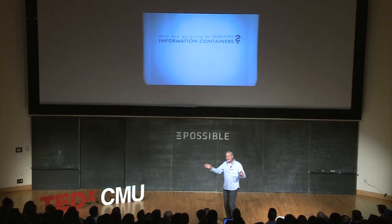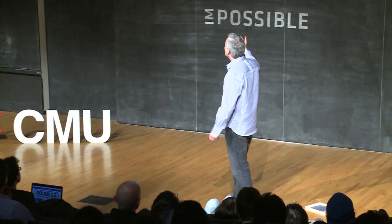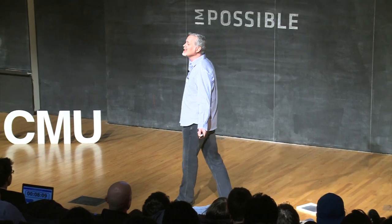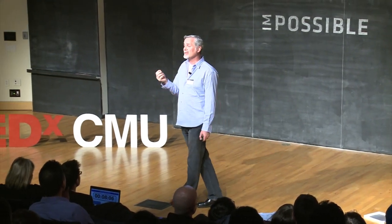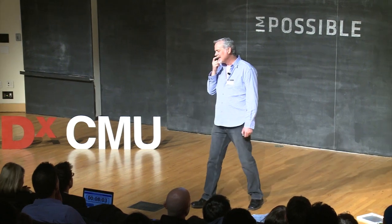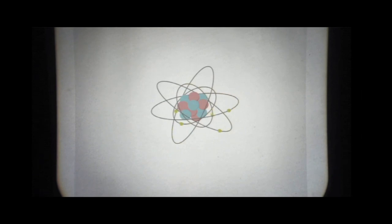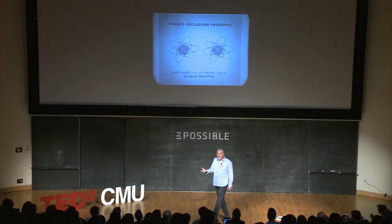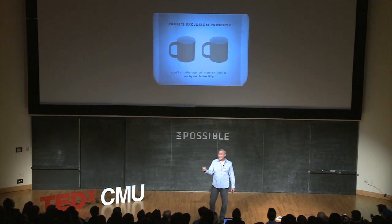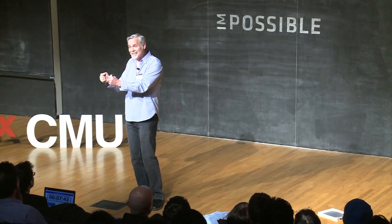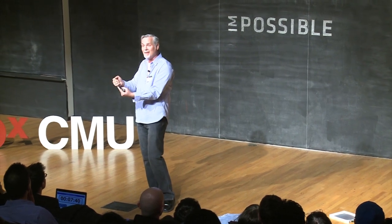So how are we going to identify all this stuff? Let's imagine we've hit a trillion nodes — predicted to be about five years from now. How are we going to identify information? How are we going to know we're talking about the right thing? Nature actually has a really cool answer to this. Down at the atomic level, no two atoms can exist in the same place at the same time — this is called Pauli's Exclusion Principle. Stuff made of matter just has a unique identity. I can point at a cup and we both know we're talking about the same thing.